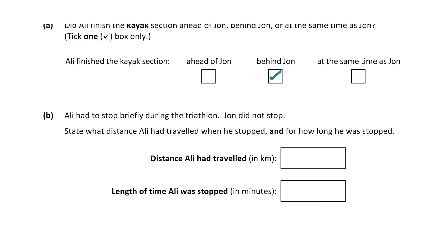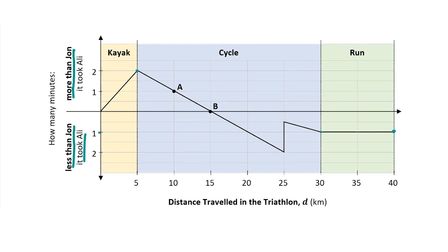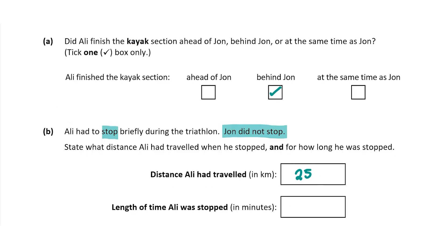Question B tells us that Ali had to stop briefly during the triathlon — John did not stop. We need to state what distance Ali had traveled when he stopped and for how long he was stopped. When looking at graphs where someone has stopped, you look for a straight line. The straight line occurs at 25 kilometers. At 25 kilometers Ali was two minutes less than John, but after the stop he's only 30 seconds ahead of John. So Ali stopped at 25 kilometers for one and a half minutes.